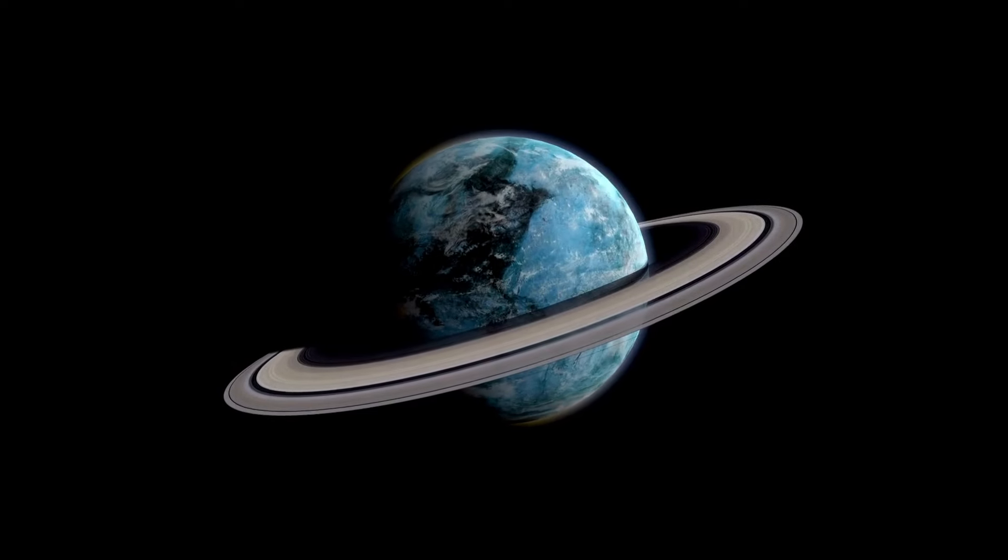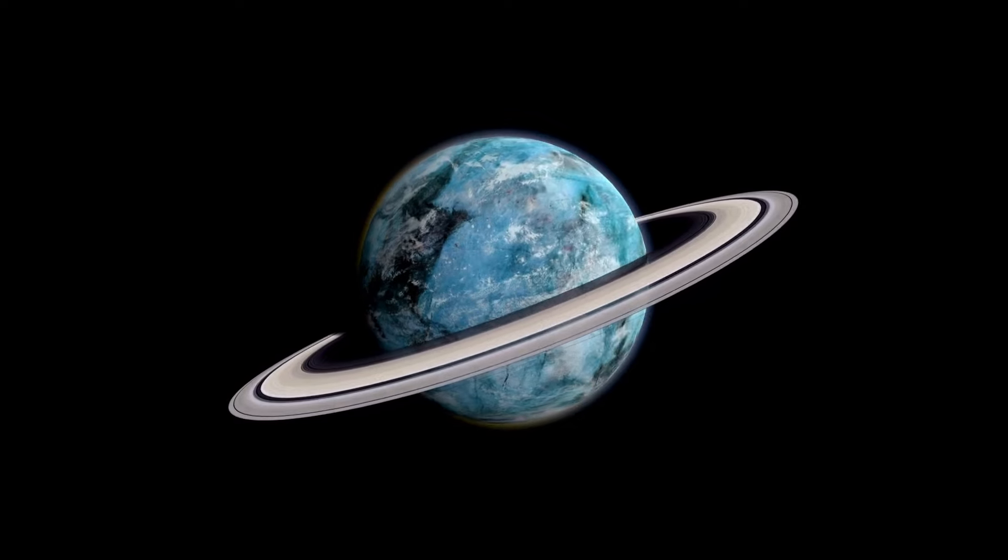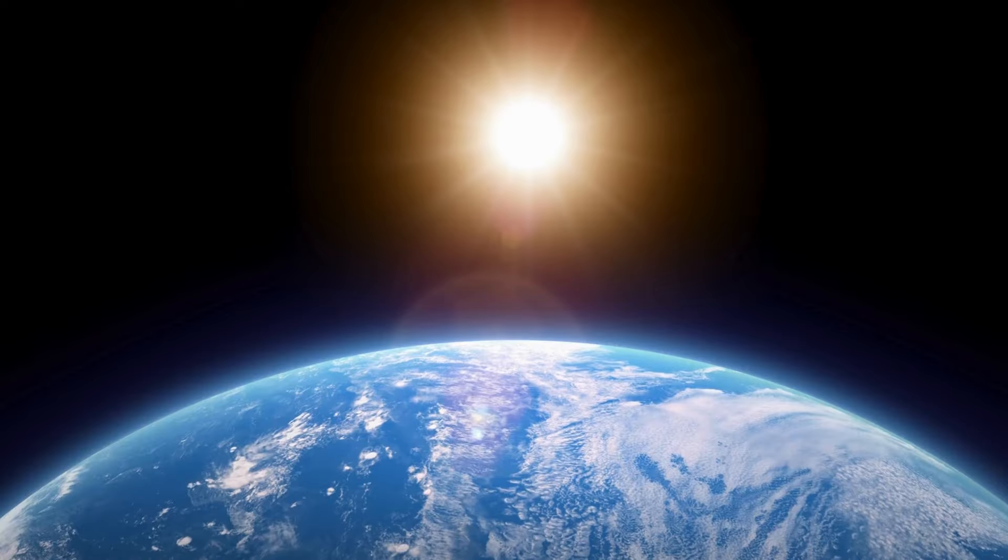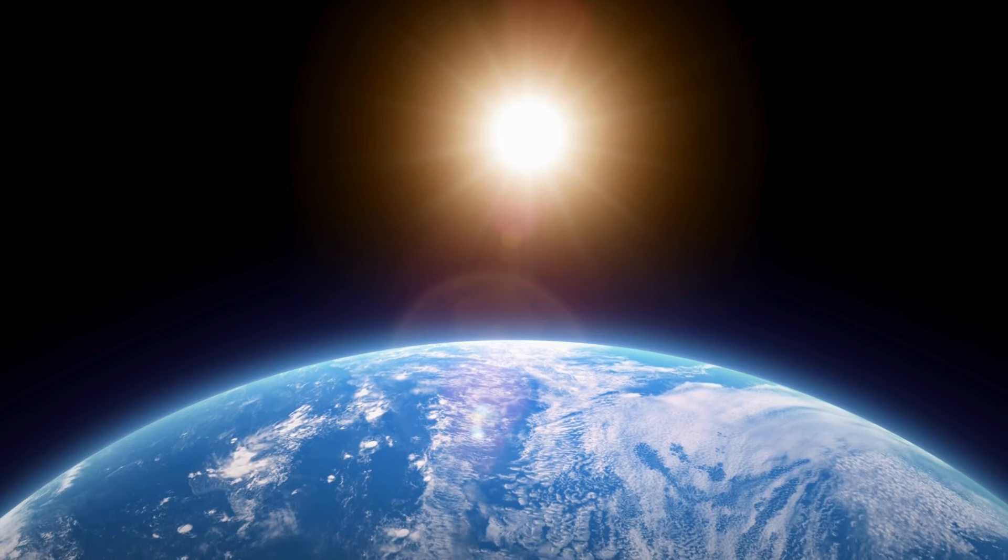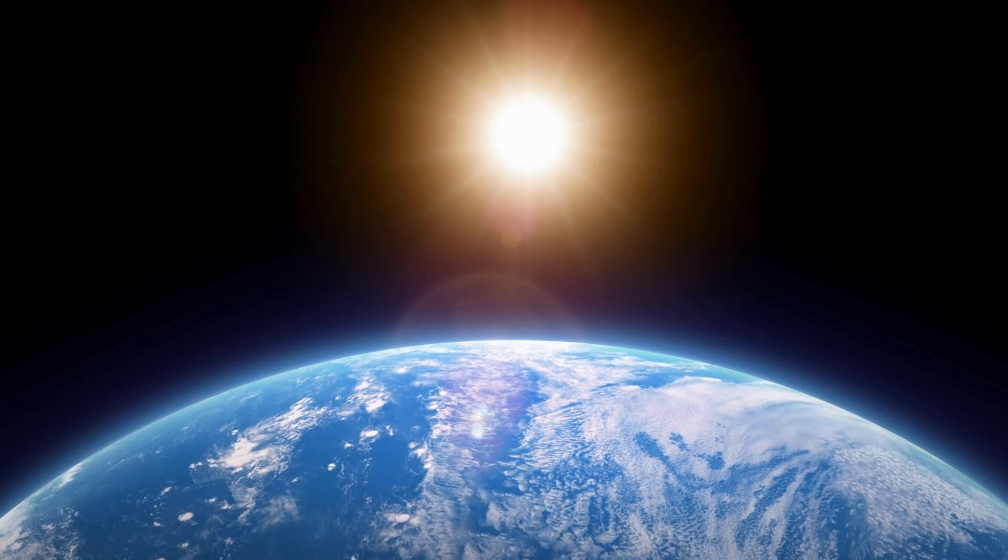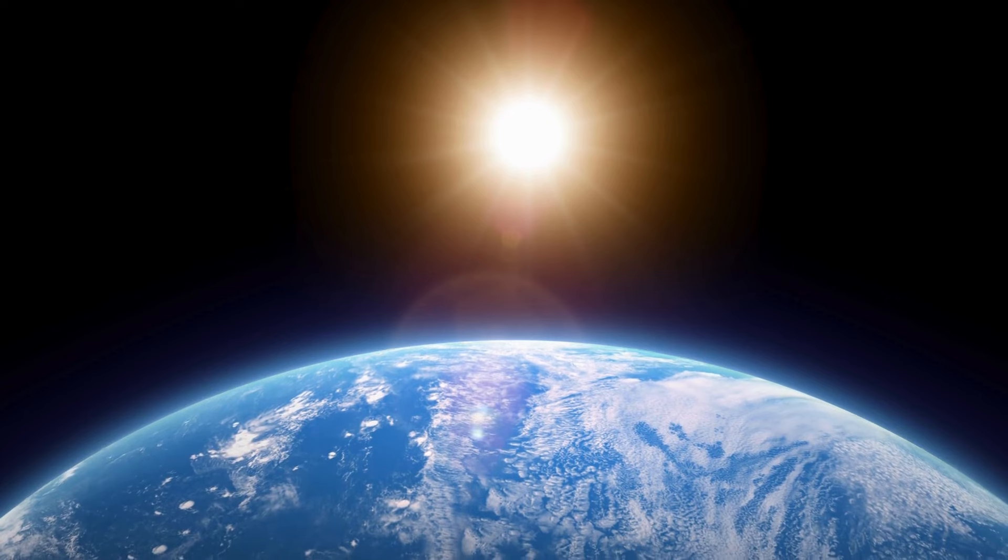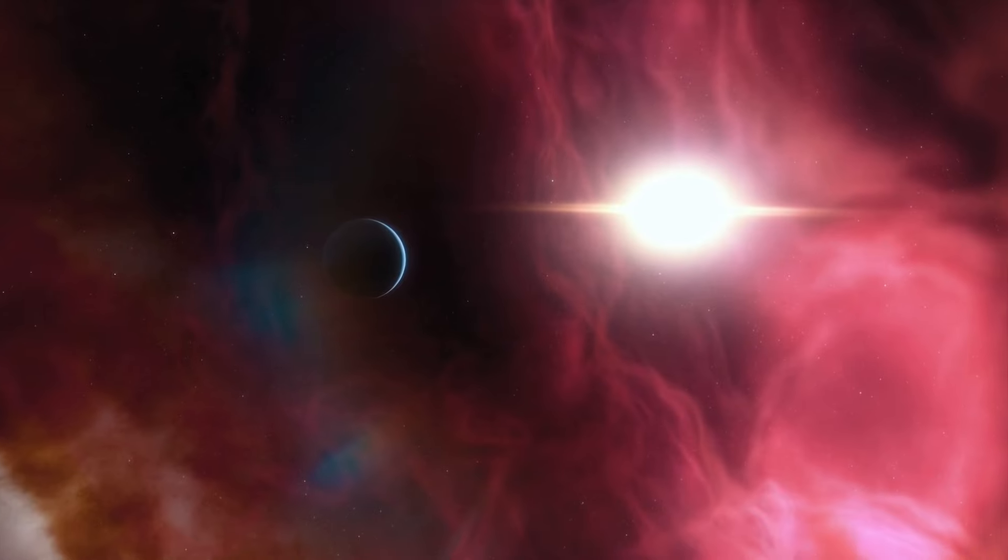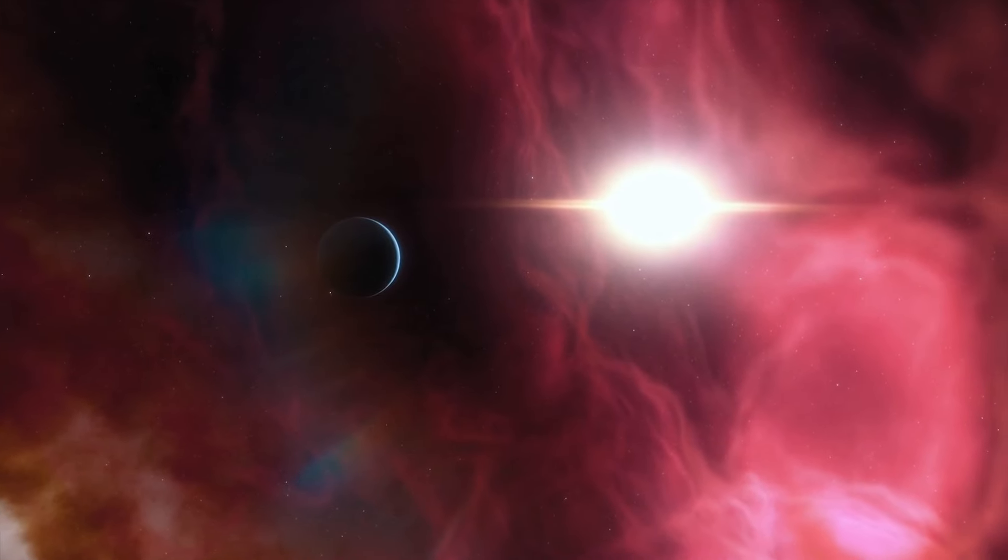In the vastness of space lies a mysterious planet nestled in the habitable zone of its star, Proxima Centauri. This planet isn't just any ordinary rock—it's Earth's cousin, Proxima Centauri b, located just 42 light-years away. This planet is cloaked in mystery and wonder. Could it be another Earth with oceans and life flourishing on its surface?